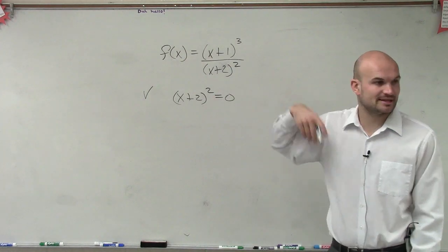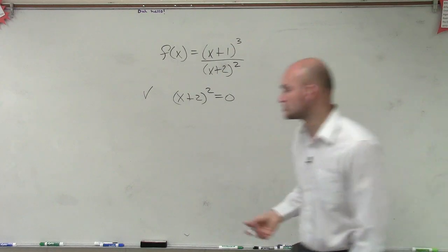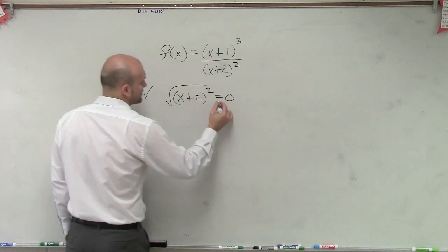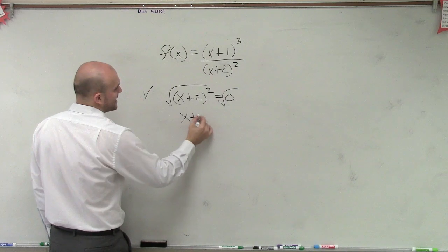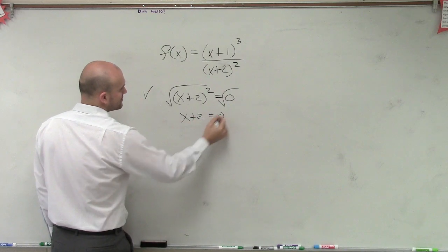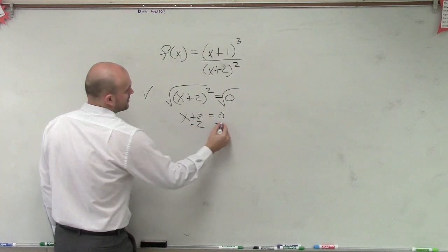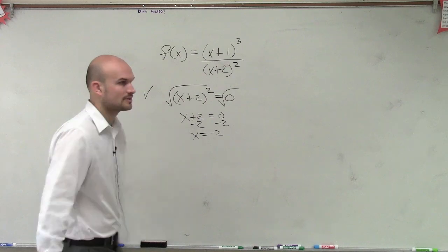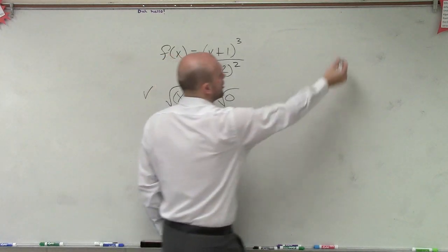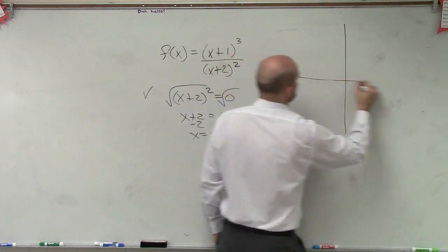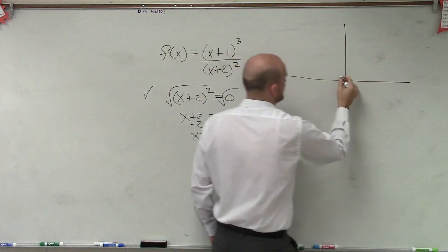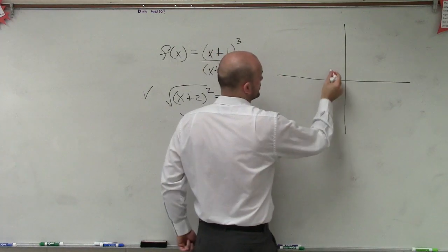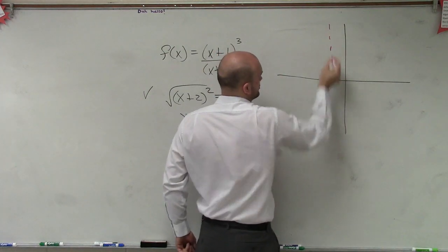So now I simply need to solve for x. I can use the square root method, which means I'm going to take the square root of both sides and get x plus 2 equals 0, subtract 2, x equals negative 2. So now I'll plot an x and y-axis. I go over to negative 2 and create my vertical asymptote.